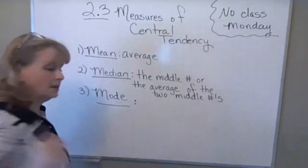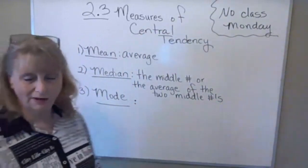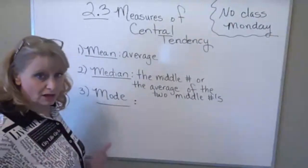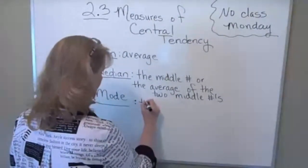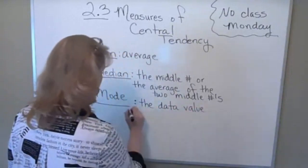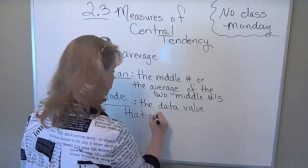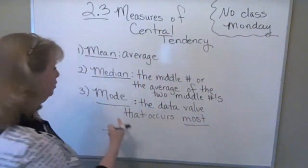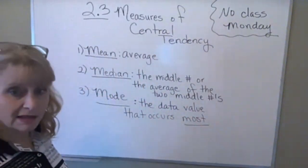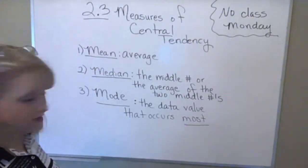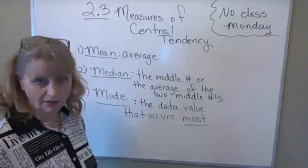And then mode — does anybody know what the mode is? It kind of sounds like what it is. Most — right, Christina. So the mode of a data set is the data value that occurs most frequently. See how the word 'most' kind of sounds like 'mode.' Median is 'middle,' mean is 'average.' You need to know these definitions.